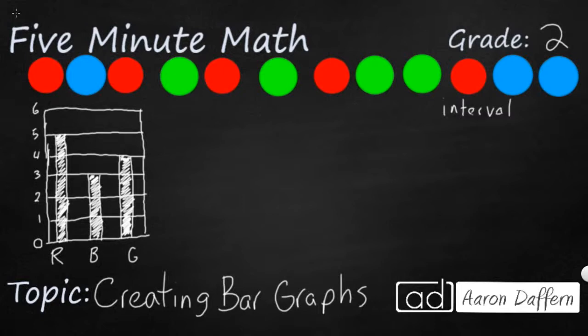But what happens if we change the interval? So let's look to see what happens. I'm going to draw another bar graph. And I'm going to try to make it as even as the other one. So I'm going to put my three colors in the same order.